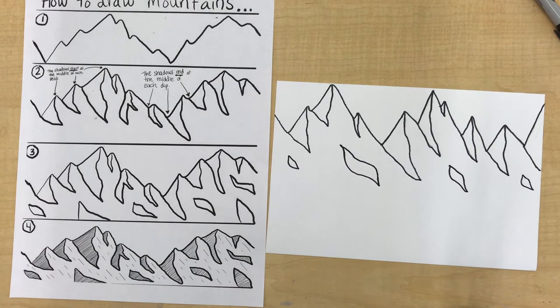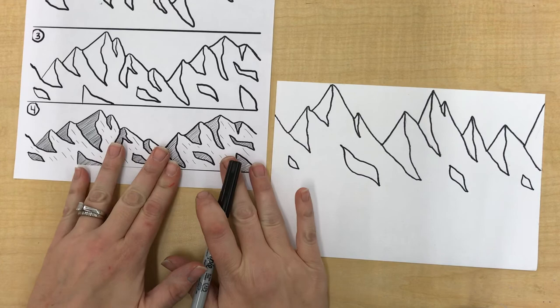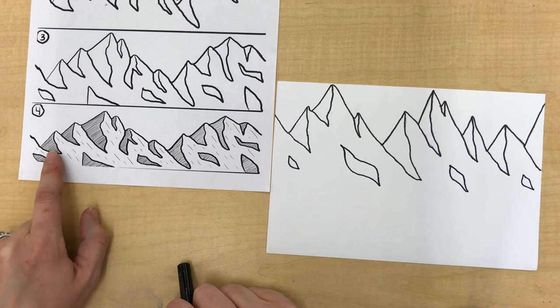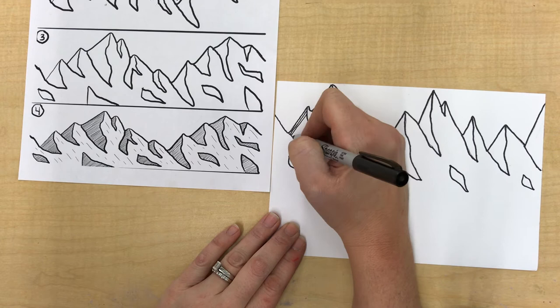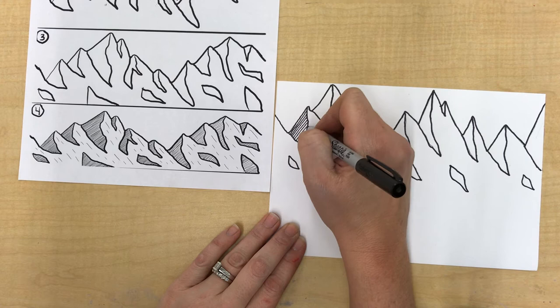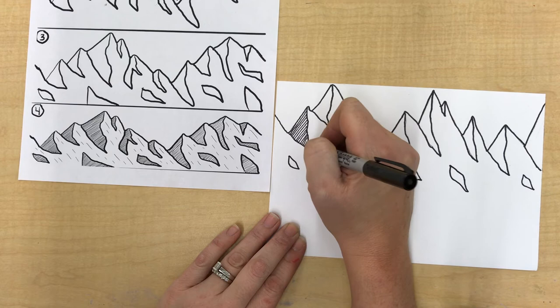Every shadow space gets filled in with parallel lines, pretty close together. So you're going to want to be very slow about this because they need to begin and end in the shadow. You want to keep them really close together. And they're kind of angled. They're diagonal lines. And they're all going to go the same way in every shadow side.